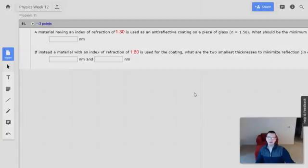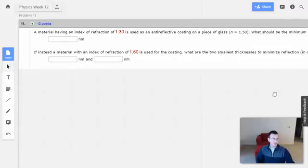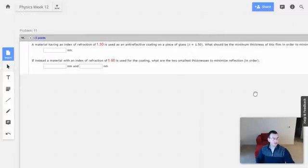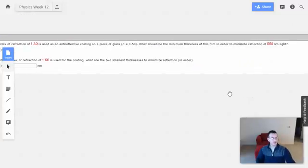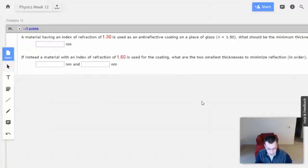Week 12, problem 11. A material having an index of refraction of 1.3 is used as an anti-reflective coating on a piece of glass with n=1.5. What should be the minimum thickness of this film in order to minimize reflection of 550 nanometer light? I'm going to start by drawing a picture.